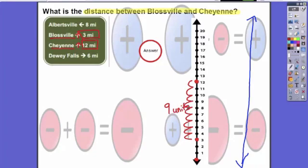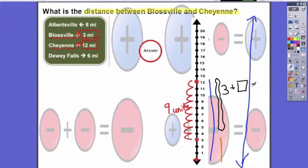I can also check. I know that Cheyenne is twelve miles away and Blossville is three miles away. So I can use part, part, whole: three from that orange line plus this mystery number part. Three plus that mystery box equals twelve, and I know that nine fills this mystery box in perfectly.